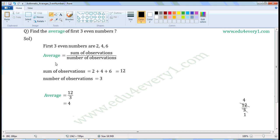Now, we can find the average using the formula. The average is equal to sum of observations by number of observations.